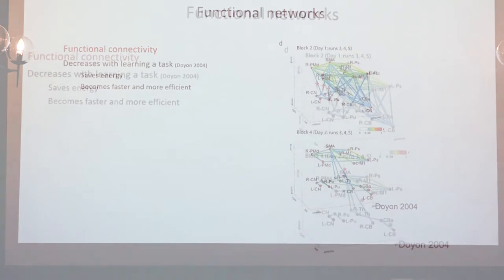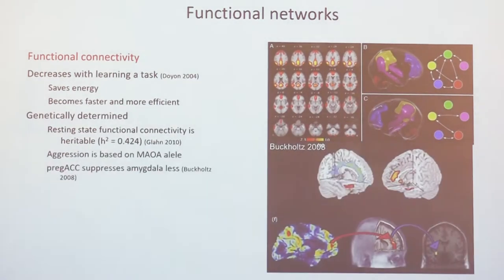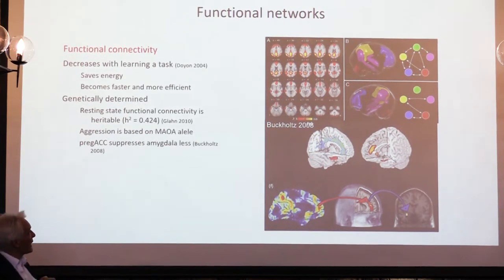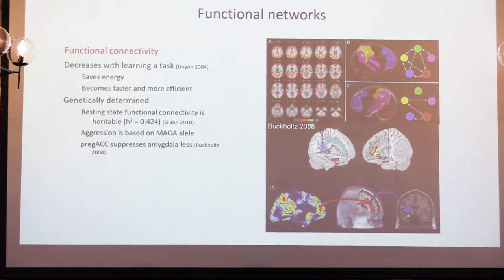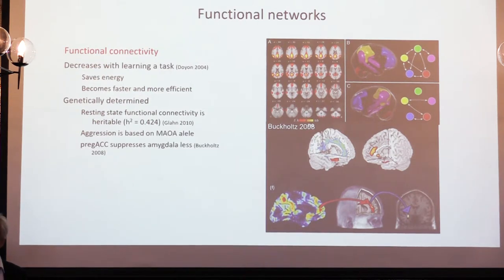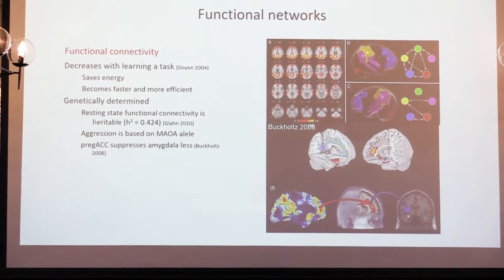Functional connectivity changes when you learn a task and is genetically determined. For example, if you look at aggression, you can have a monoamine oxidase A allele, and if you have the wrong polymorphism — also called a warrior gene — then your pregenual anterior cingulate does not suppress your amygdala anymore. From Paul MacLean's idea, the amygdala is all-or-nothing, so it needs to be dimmed. The dimmer is the cingulate cortex, and the pregenual actually dims the all-or-nothing response of the amygdala.